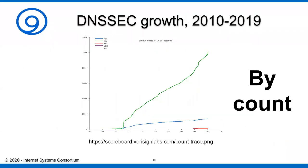From that point through last year, this data from VeriSign Labs is still in place. This chart shows by count that we've broken the 1 million mark as far as how many zones have been signed. In .com and .net you'll see movement upward.